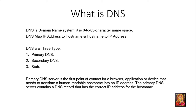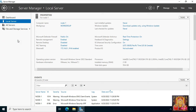A primary DNS server is the first point of contact for a browser, application, or device that needs to translate a human-readable hostname into an IP address. The primary DNS server contains a DNS record that has the correct IP address for the hostname. In this video we will install and configure primary DNS on this server.